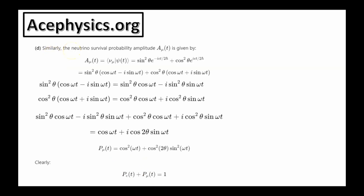Part D says: find the probability of measuring the muon neutrino as a function of time. The muon neutrino is the state it starts with. Following the same procedure but using the muon neutrino state instead of the electron neutrino state, you find that the probability equals cosine squared of omega t, plus cosine squared of 2 theta times sine squared of omega t. This is the neutrino survival probability as a function of time.